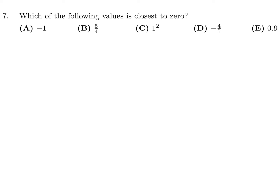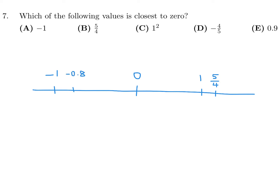Which of the following values is closest to 0? Let's draw a number line with 0 here and plot the values. Negative 1 is somewhere here; 5 over 4 is about 1.25; 1 squared is 1; negative 4 over 5 is negative 0.8; and 0.9 is over here. The number closest to 0 is negative 4/5, which is 0.8 away. The answer is D.